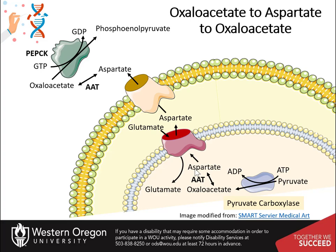Aspartate can then be transported to the intermembrane space of the mitochondria through an antiporter that transports one molecule of aspartate out of the matrix and one molecule of glutamate into the matrix. Once in the intermembrane space, the aspartate can pass freely through a pore in the outer mitochondrial membrane, and once in the cytoplasm, aspartate is reconverted back to oxaloacetate using the cytoplasmic aspartate aminotransferase enzyme.